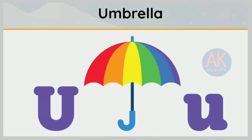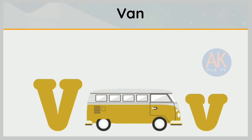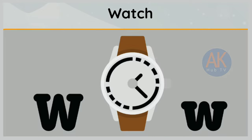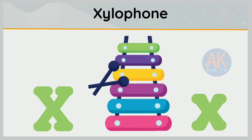U is for umbrella. U, u, umbrella. V is for wand. W, w, wand. W is for watch. Watch, watch, watch.